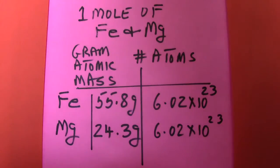Now if you have a question that asks how many atoms are in 20 grams of iron, you know that 55.8 grams has 6.02 times 10 to the power of 23 so you could calculate the number.